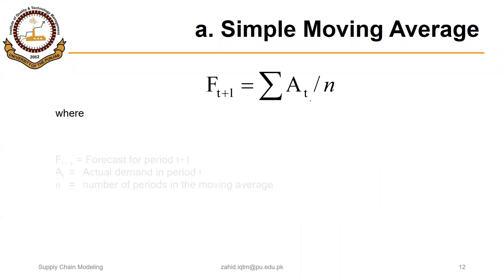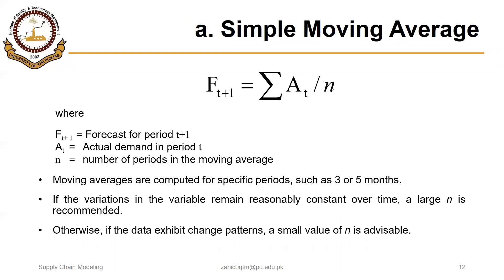This is the formula for forecasting using simple moving average. We add the actual demand or sales data for a certain number of periods and divide by the number of periods. That is the simple formula used for the average.